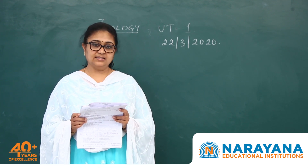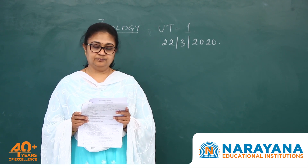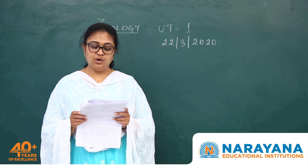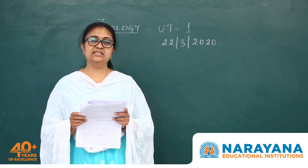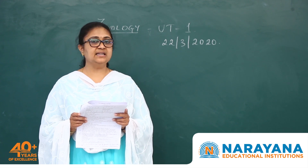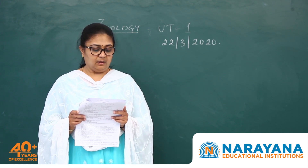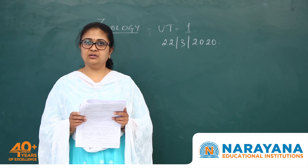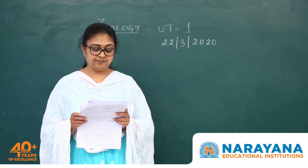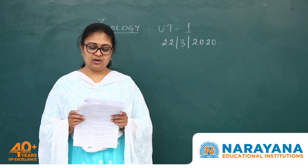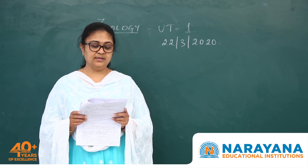Question 142: which is NOT a limitation of the ecological pyramid? Statement 1 — pyramids do not account for the same species belonging to two or more trophic levels — is a limitation. Statement 2 — pyramids assume a simple food chain, something that almost never exists in nature — is also a correct limitation. Statement 3 — pyramids accommodate a food web — is incorrect because they do not, so this statement is not a valid limitation. Statement 4 — saprophytes are not given any place in ecological pyramids even though they play a vital role — is again a limitation. So statement 3 is your answer.